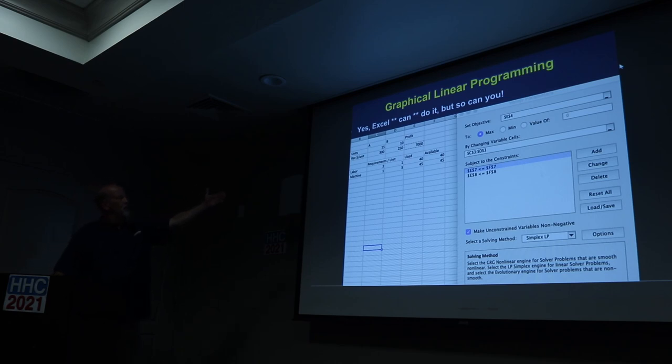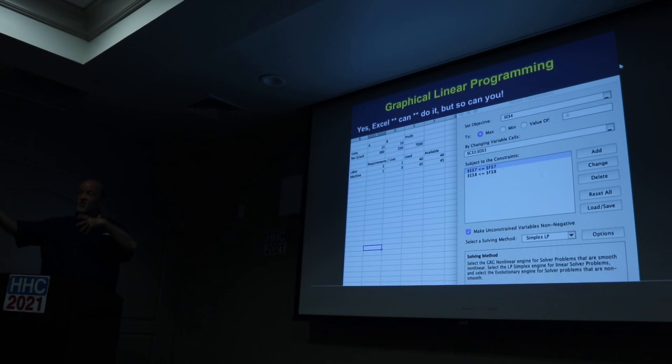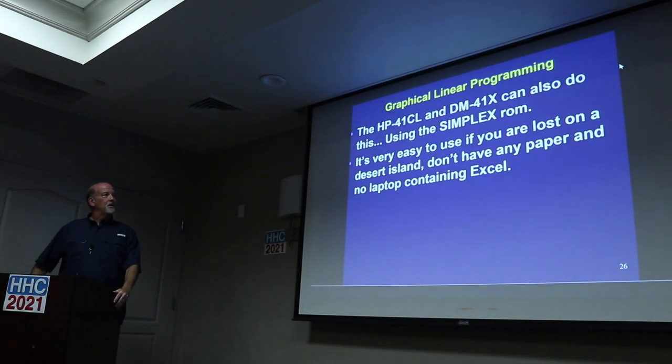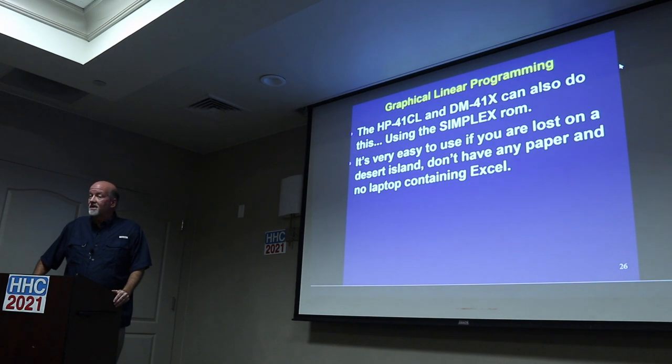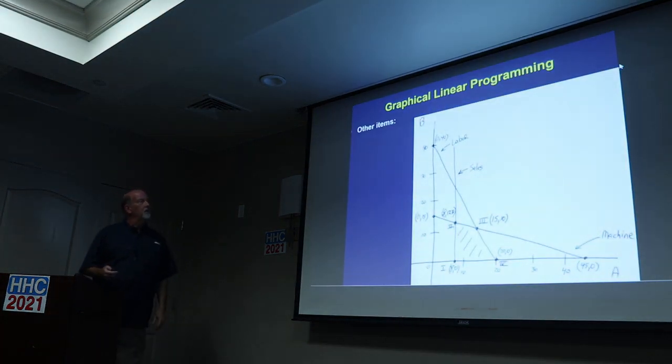Yes, Excel can do it, but so can you. So that's the exact problem that we did before. Laid out in Excel, it has a solving method, and you can use simplex linear programming. There are two variables, it's overkill. But it came up with 15As and 10Bs. So you can do them in Excel, but if you don't understand what it's doing, then that becomes a black box. And if you're using a black box, you don't know when you've made a mistake. The 41CL and the DM41X can also do this.